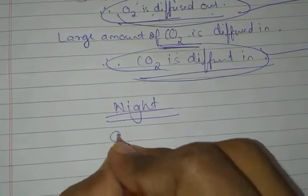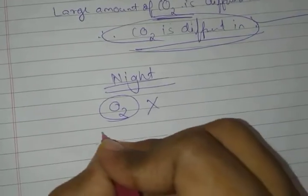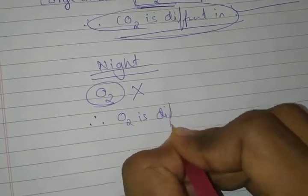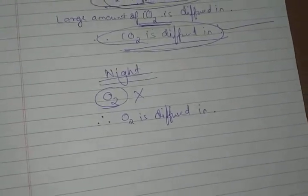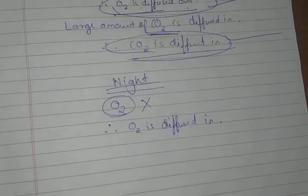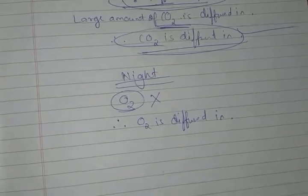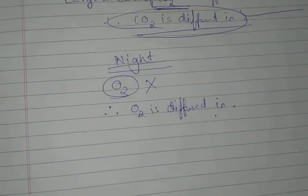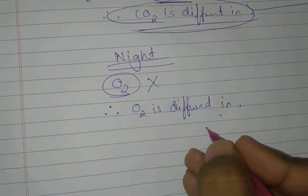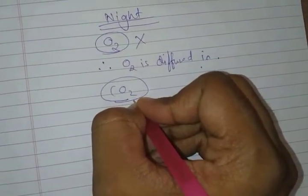Now we'll come to nighttime. At night, does the plant perform photosynthesis? No, it doesn't - meaning oxygen is not produced. But at night it will still perform respiration, so where will it get oxygen from? From outside. So at night, oxygen is diffused in. In nighttime the plant doesn't perform photosynthesis so no oxygen is produced. The plant still has to perform respiration so it takes oxygen from outside - oxygen diffuses in. And since respiration occurs, carbon dioxide is produced.